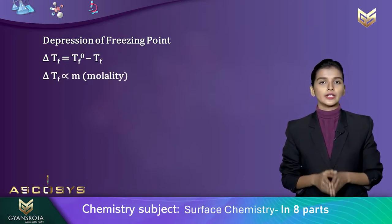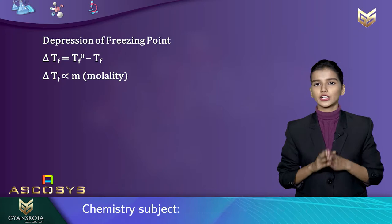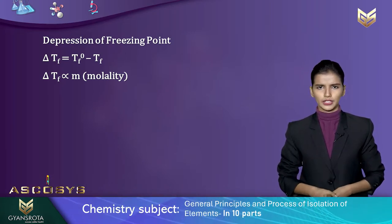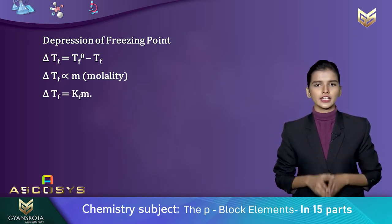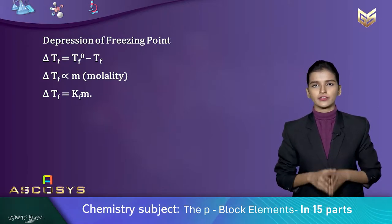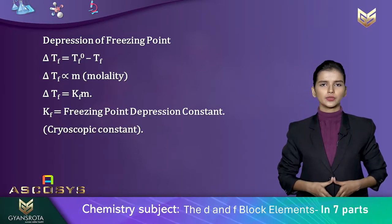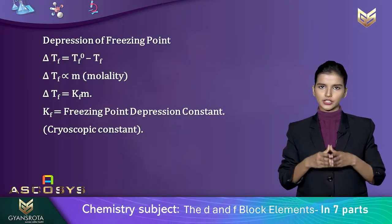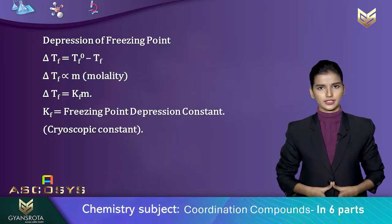Delta Tf is proportional to the molality of the solution, similar to the boiling point. So delta Tf equals Kf times m. Here, Kf is the freezing point depression constant, also called the cryoscopic constant.